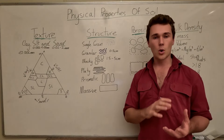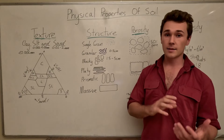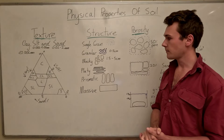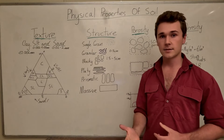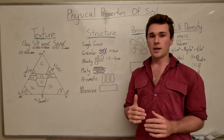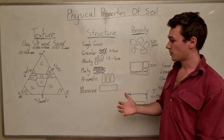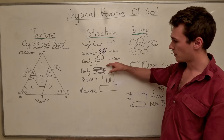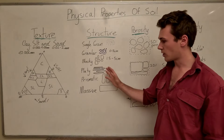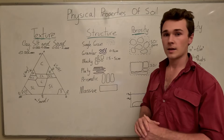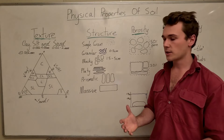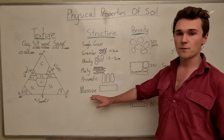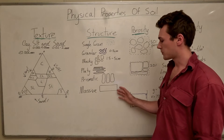Then we have blocky structure — slightly more compacted, typically 1.5 to 5 centimetres, but not too bad. Next is platy soil, very typical of compacted soils — plates form on the soil surface, which is very bad for gas exchange, water exchange, and roots exploring the profile. Water can't seep straight down; it moves along the plate until it finds an opening. This is very bad for water infiltration. Next is prismatic — almost a larger blocky structure with very long aggregates. Finally, massive soils have no structure at all; everything is clumped together, very bad for any soil function.